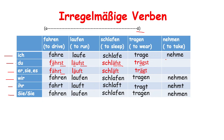For nehmen, we need to learn it separately, because it has a totally different way of changing. Nehmen becomes nimmst for du and nimmt for er/sie/es. So the difference between regular and irregular verbs is their changing pattern for du and er/sie/es.